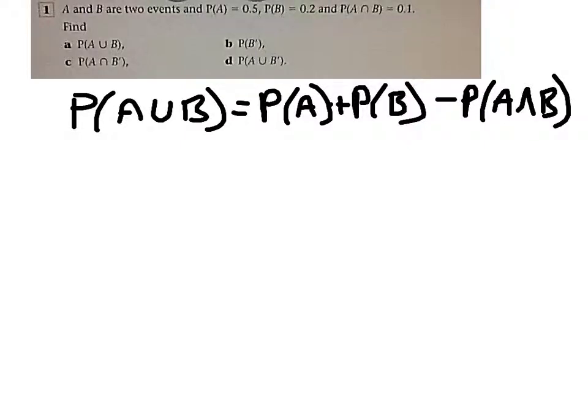This is question 1 from exercise 5C from your textbook. We've got two events. The probability of A is 0.5, the probability of B is 0.2, and the probability that they have them together is 0.1.